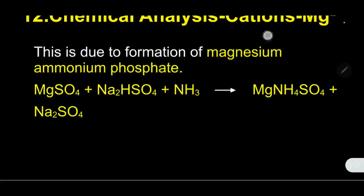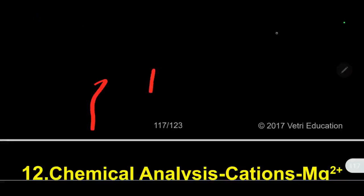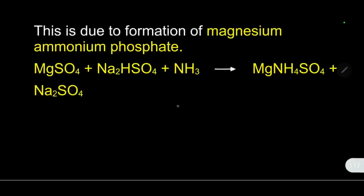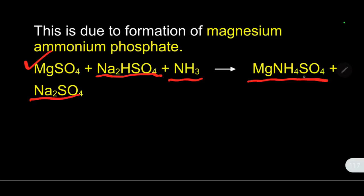This is the reaction. This is due to the formation of magnesium ammonium phosphate. Correspondingly, magnesium sulfate reacts with disodium hydrogen phosphate and ammonia. We are getting magnesium ammonium phosphate plus sodium sulfate. The magnesium ammonium phosphate precipitate confirms the presence of magnesium 2 plus ion.